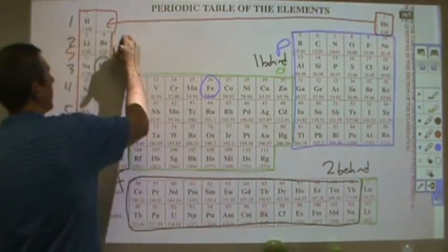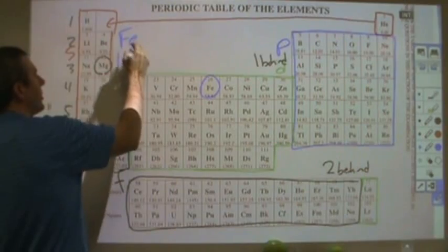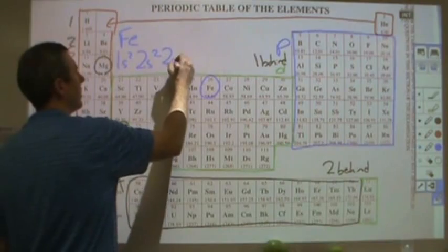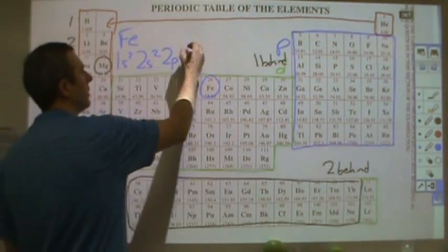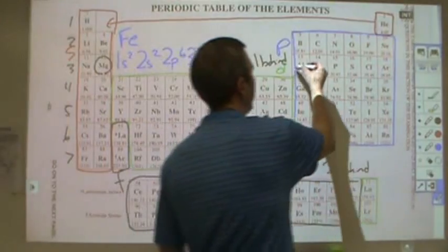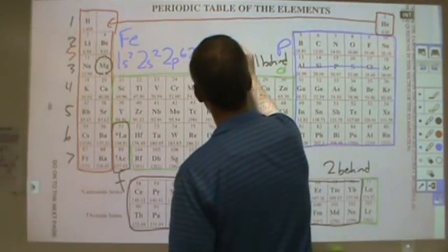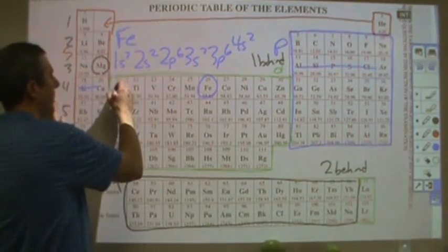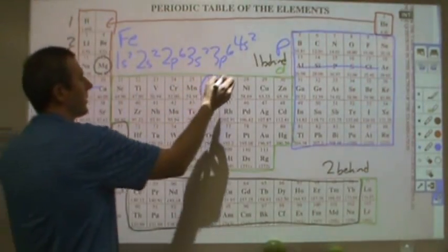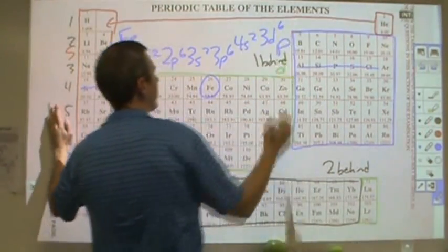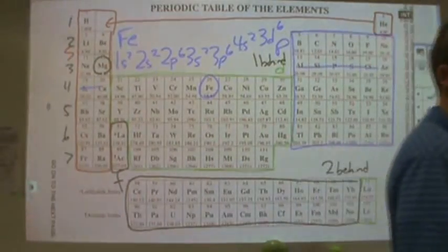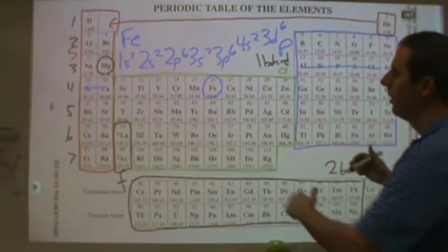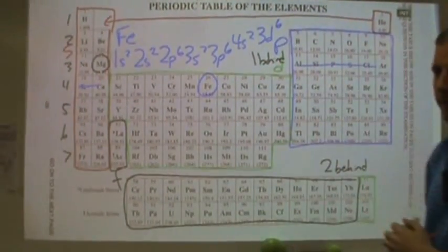So for iron, my electron configuration would go 1s2 for these two, 2s2 for those two, 2p6, 3s2, 3p6, 4s2. And now I'm in the 3d. So I'm going to count 1, 2, 3, 4, 5, 6, 3d6. So iron has 26 electrons. It has more orbital states than it's occupying. And they filled up from lowest energy to highest, off-bought principle. And that would be my electron configuration of iron.